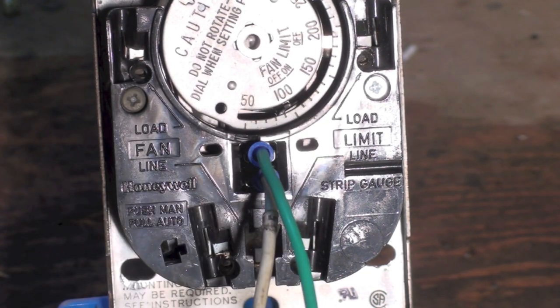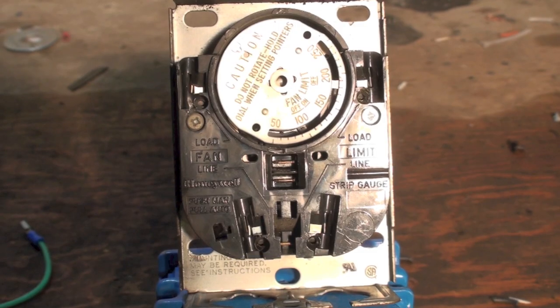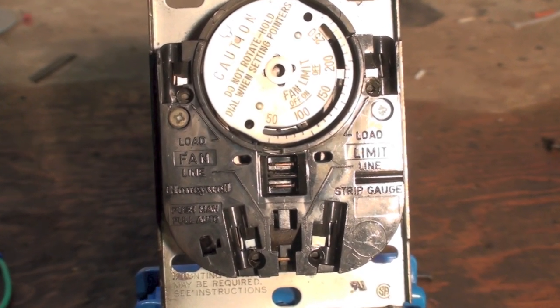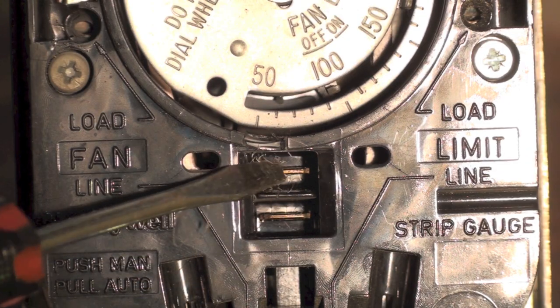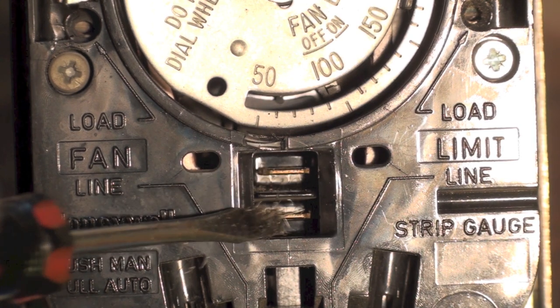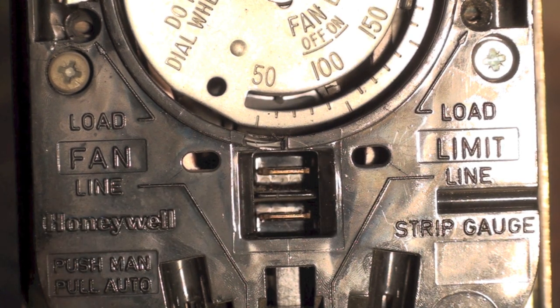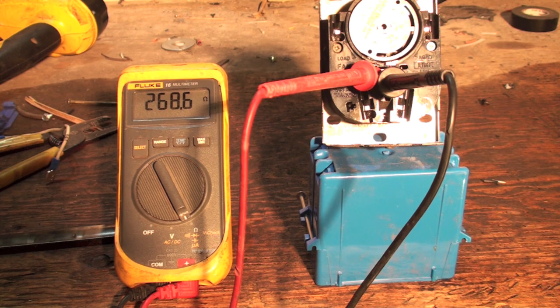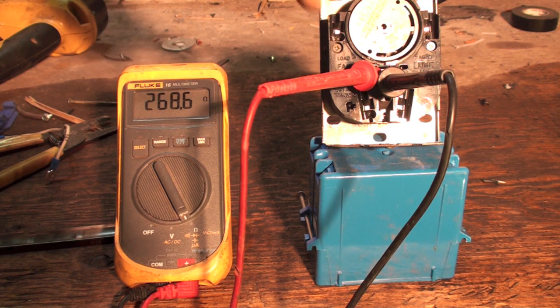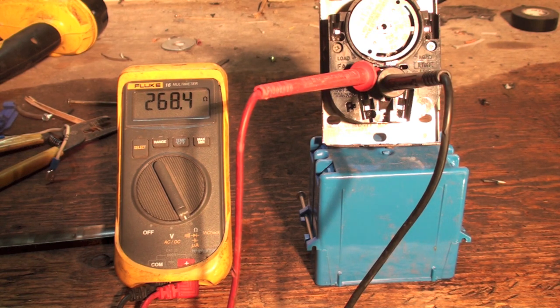Okay, the wires are taken off and you can see these two terminals right there. Those go to a heater. What I've done is put an ohmmeter across those two terminals, and you notice I'm reading 268 ohms.